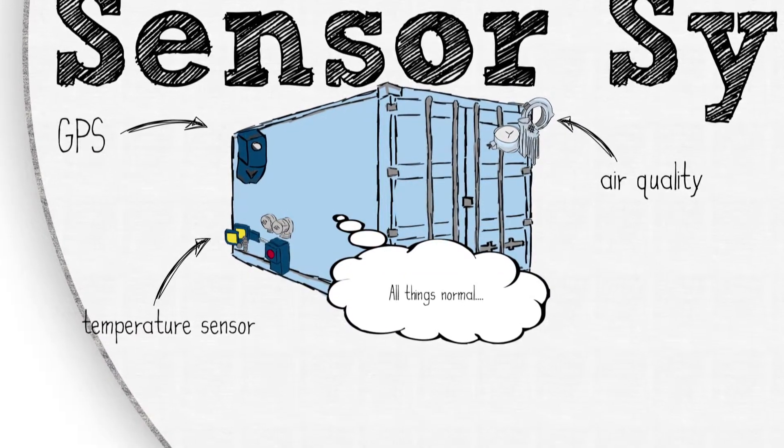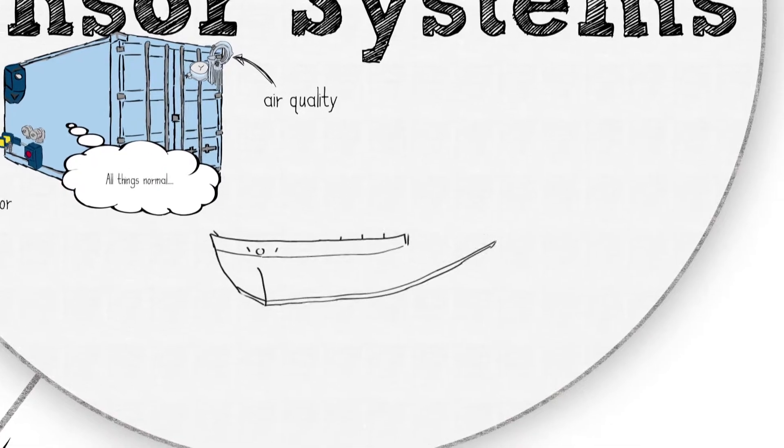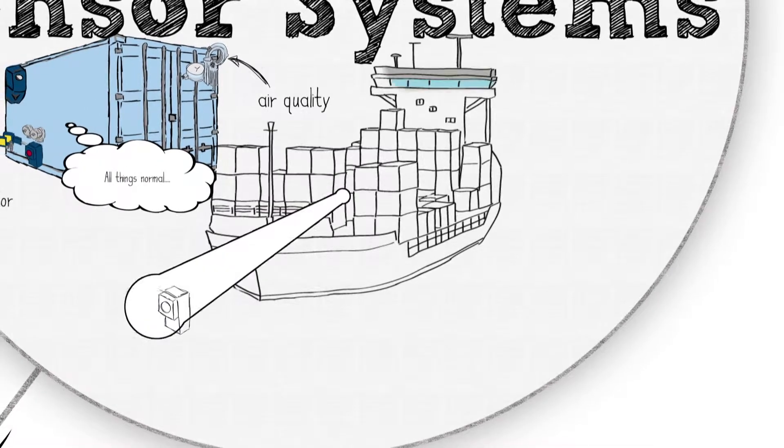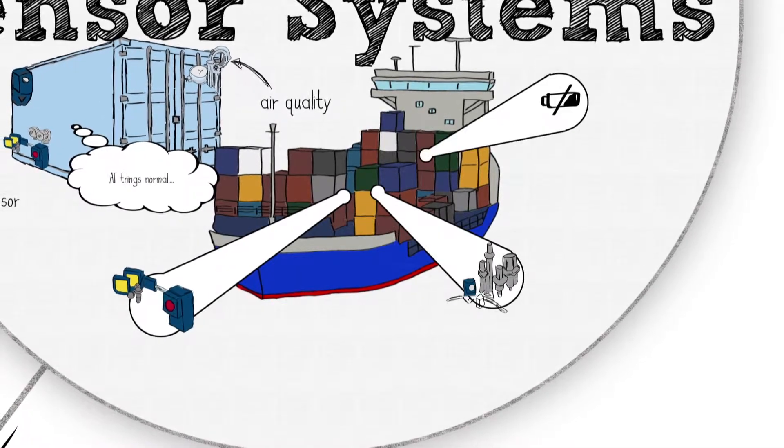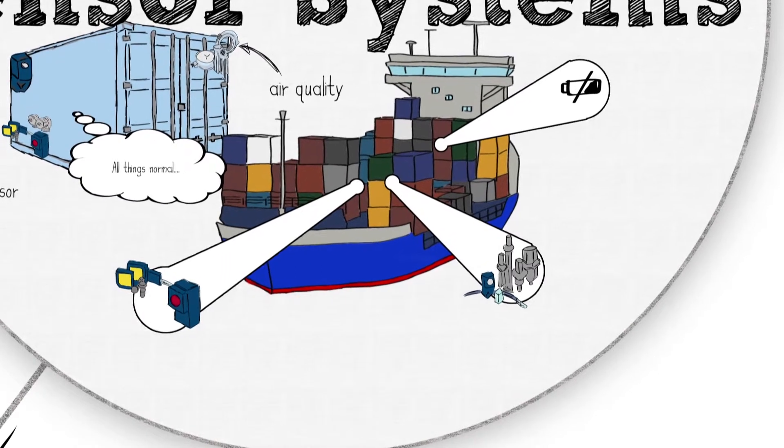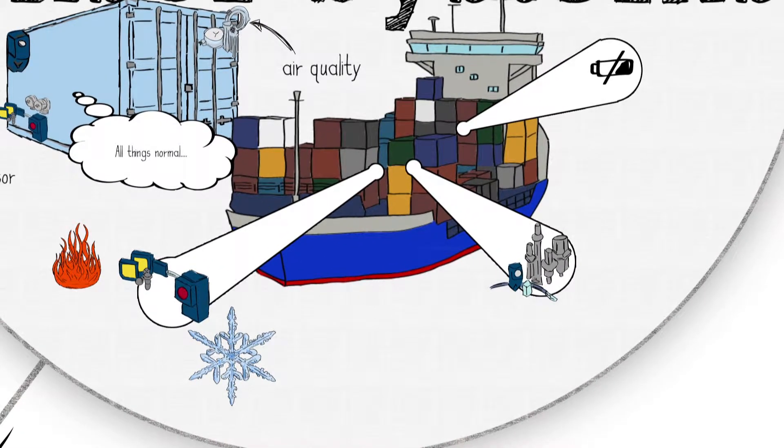Quite often, existing sensors are ill-equipped to function under the demanding conditions of logistics and transport. Logistics sensors need to function in the hardest conditions, such as extremely low or high temperatures and excessive humidity or condensation.